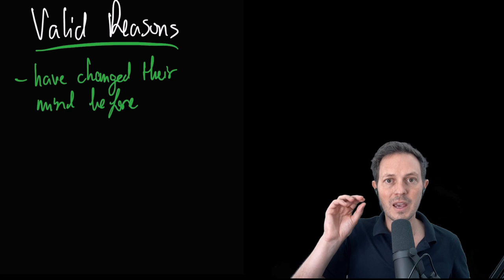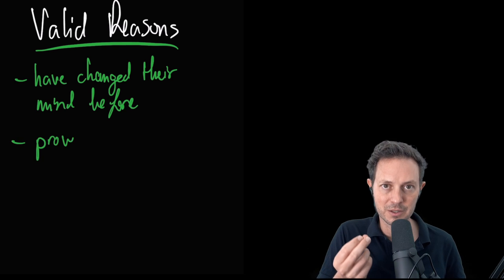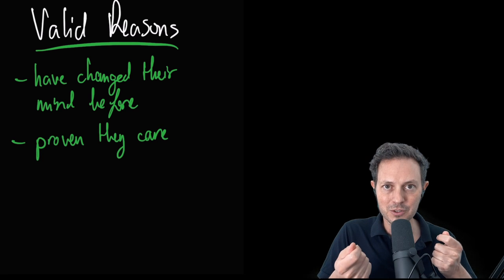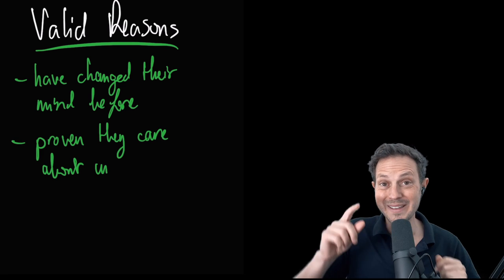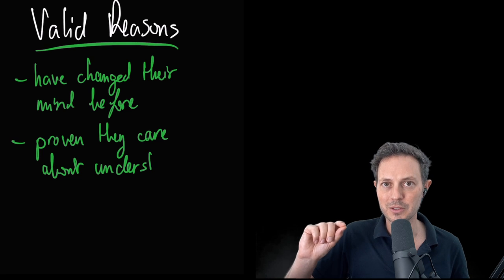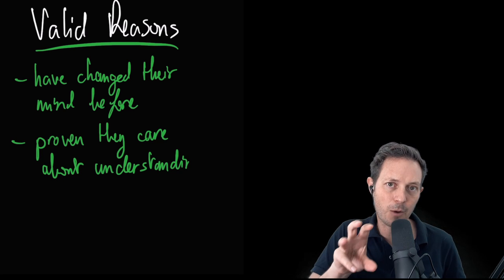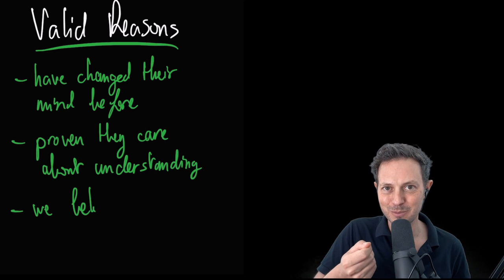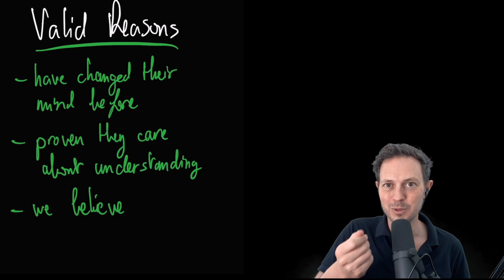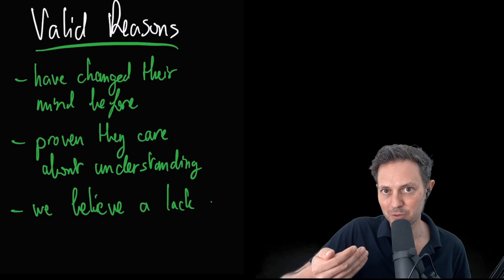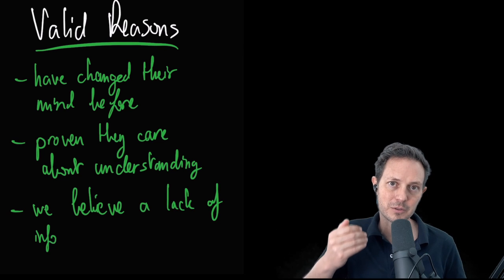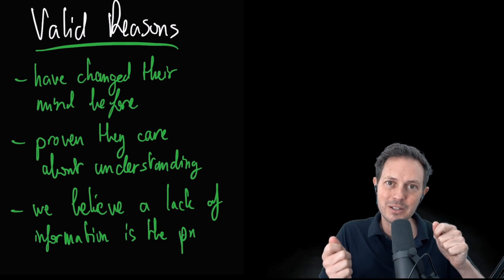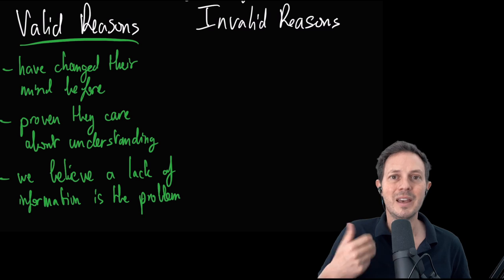The second one is that they have proven to us that they care about understanding our point of view. In other words, they ask us questions. They try to understand where we come from, even if they disagree with us. But they try to understand our logic. And the last one is that we believe that a lack of information is the problem for the disagreement. So if we can share different information or relevant information, or help someone process the information more accurately, that might change their point of view.